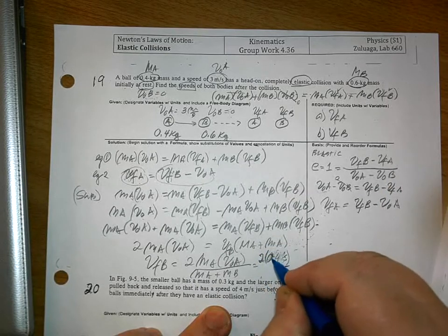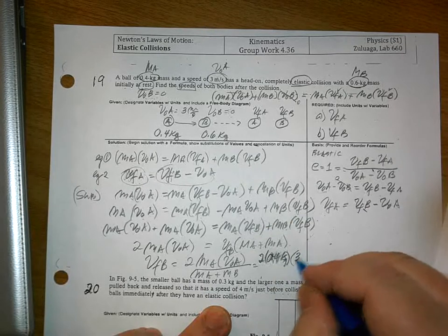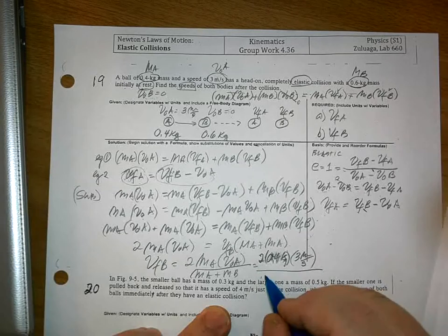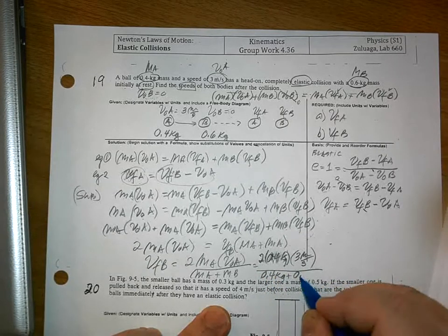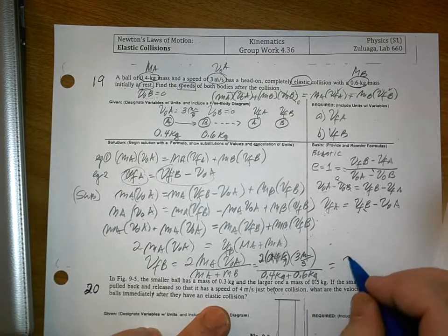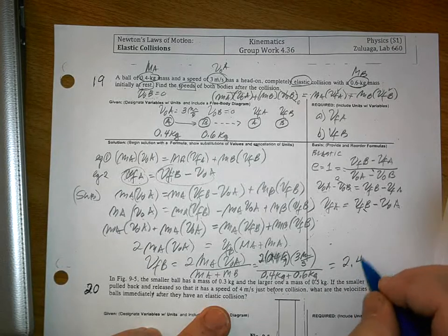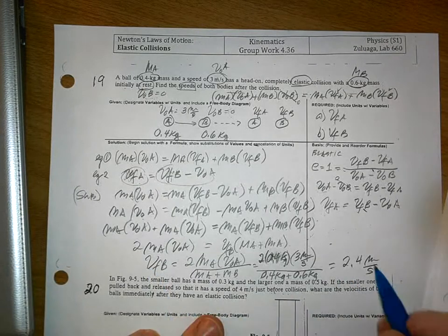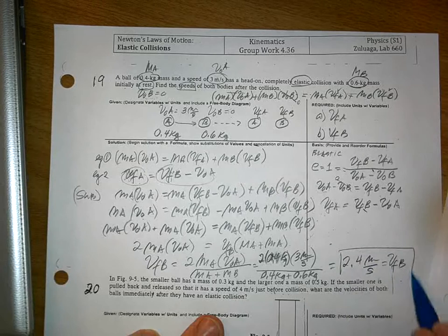Your MA is 0.4 kilograms. 0.4 kilograms, 3 meters per second divided by 0.4 kilograms plus 0.6 kilograms. And your answer here is 2.4 meters per second. So, this is VFB.